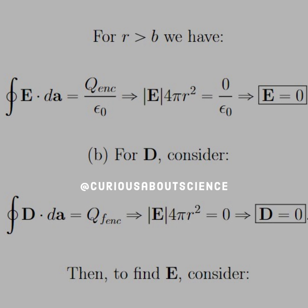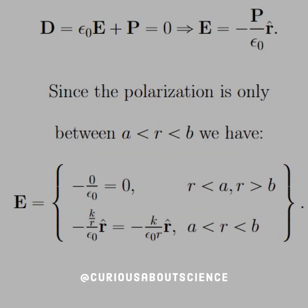Moving on to part B. For the electric displacement, consider Gauss's law — it shows that we don't have a free enclosed charge because there were no free charges given in the problem, just the polarization in the dielectric. So the electric displacement is zero. From there, since D equals epsilon naught E plus the polarization P, and that equals zero, we can algebraically solve for the electric field in the R-hat direction. Since the polarization is only between A and B, anything less than A and anything greater than B gives zero, and between A and B the electric field is the same as what we just found.